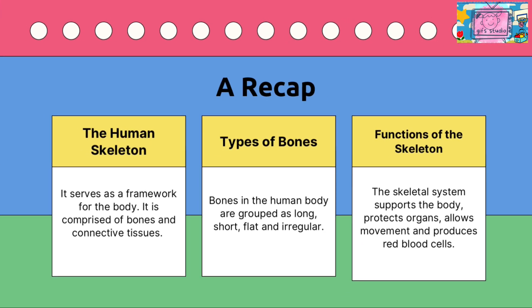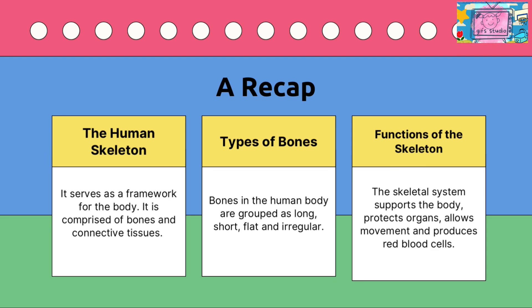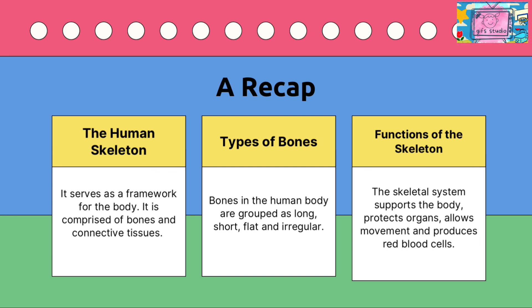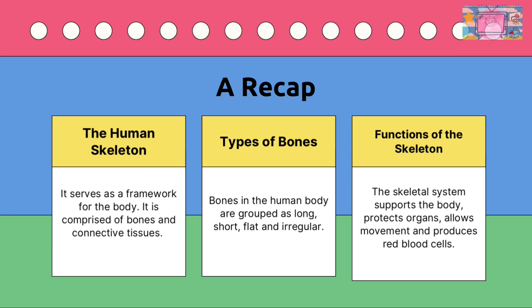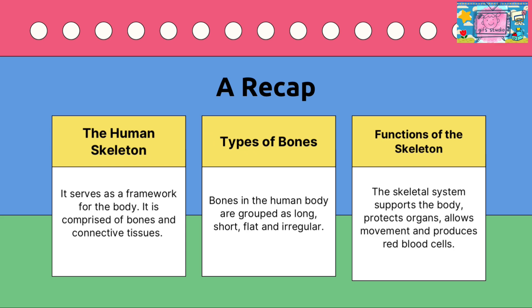A recap: the human skeleton serves as a framework for the body, comprised of bones and connective tissues. Bones on the human body are grouped as long, short, flat, and irregular. The skeletal system supports the body, protects organs, allows movement, and produces red blood cells.